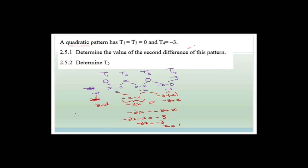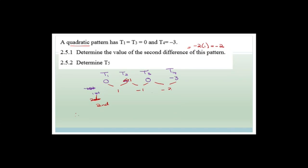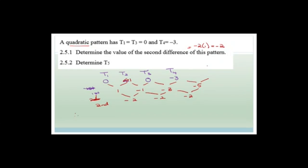To find t5: with x equals 1, the sequence is 0, 1, 0, negative 3. The first differences are 1, negative 1, negative 3. The second difference is consistently minus 2. Continuing the pattern, the next first difference is negative 3 minus 2 equals negative 5, so t5 equals negative 3 plus negative 5 equals negative 8.